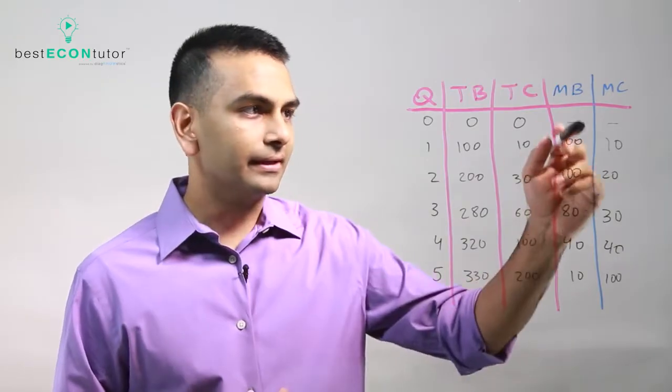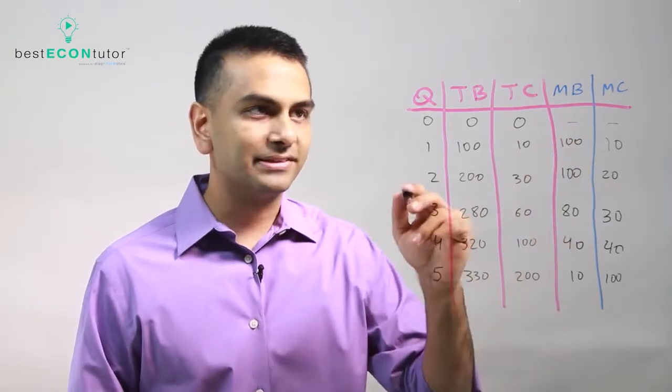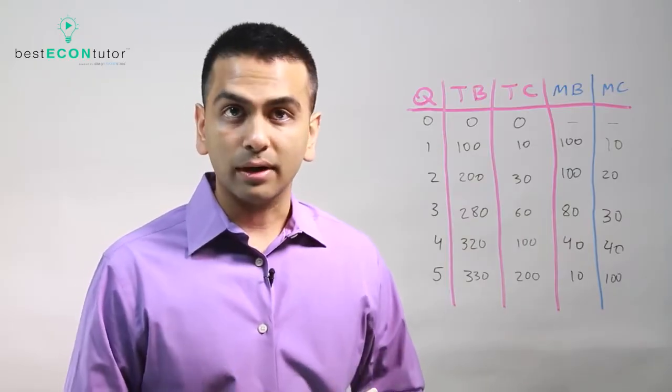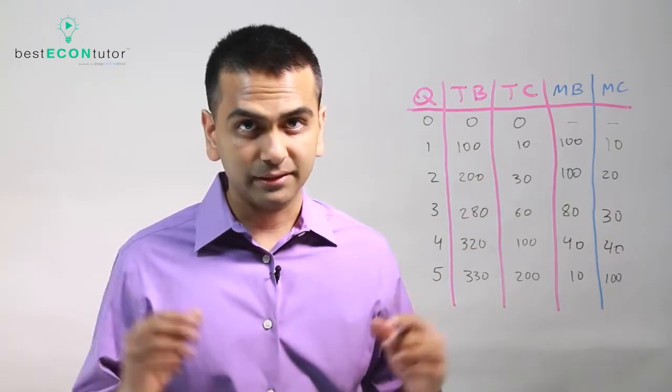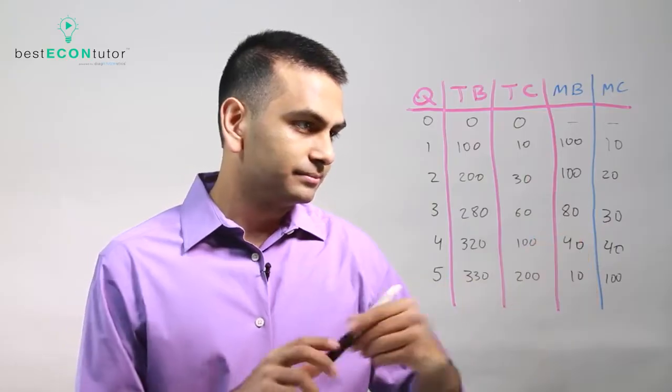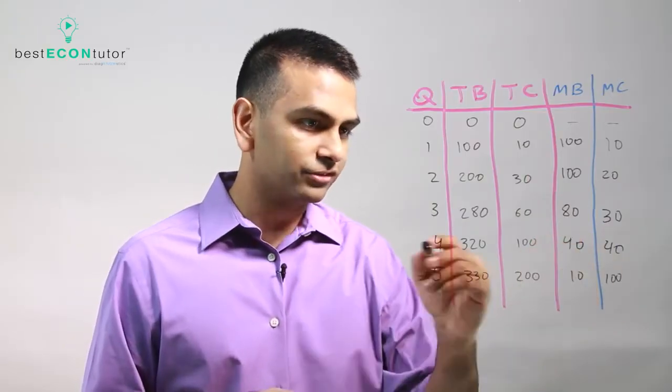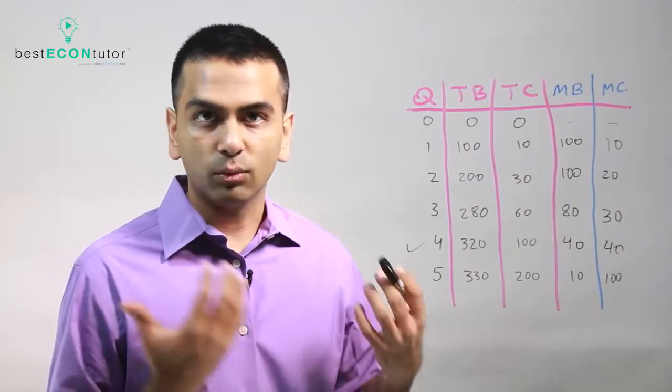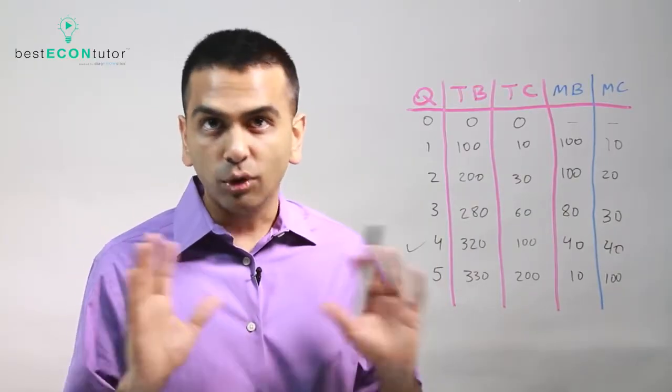Now that we have our marginal benefits and our marginal cost, we can easily figure out the best quantity. All we have to do is look at where they're equal to each other. Technically that's over here, so we know that the answer is going to be four houses. We want a quantity of four and that's where we're going to maximize our total profits or total utility.